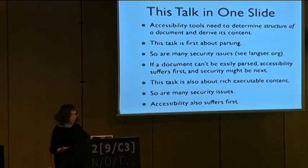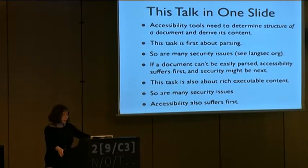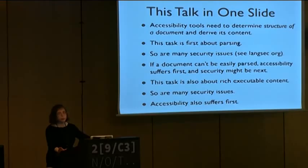In one slide: accessibility tools need to figure out what's in the document. They need to determine the structure of a document and then derive its content. This is about parsing of your digital content. Many security issues are also about parsing of documents. And if you have a document format that cannot be easily parsed, then the first people to notice it are the accessibility community. The security problems will likely come next.